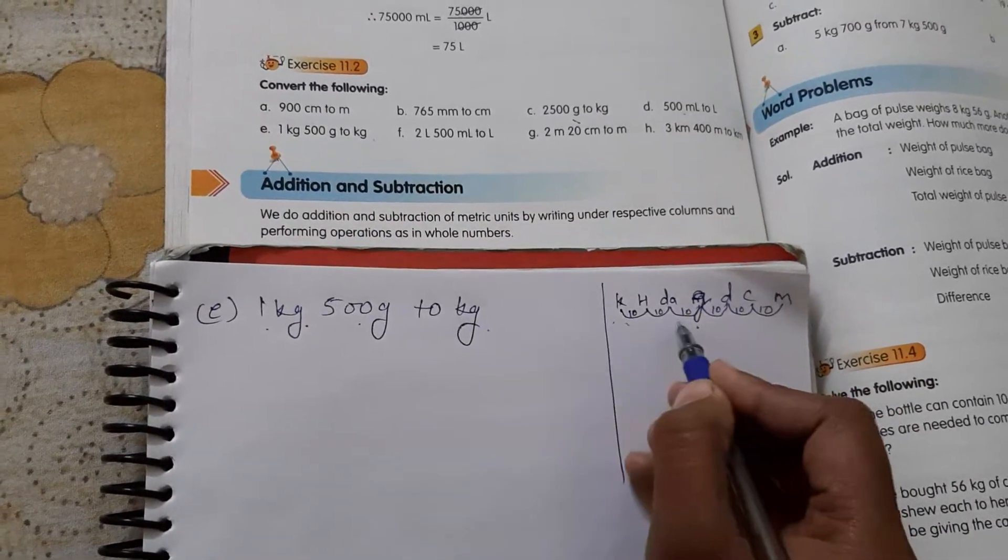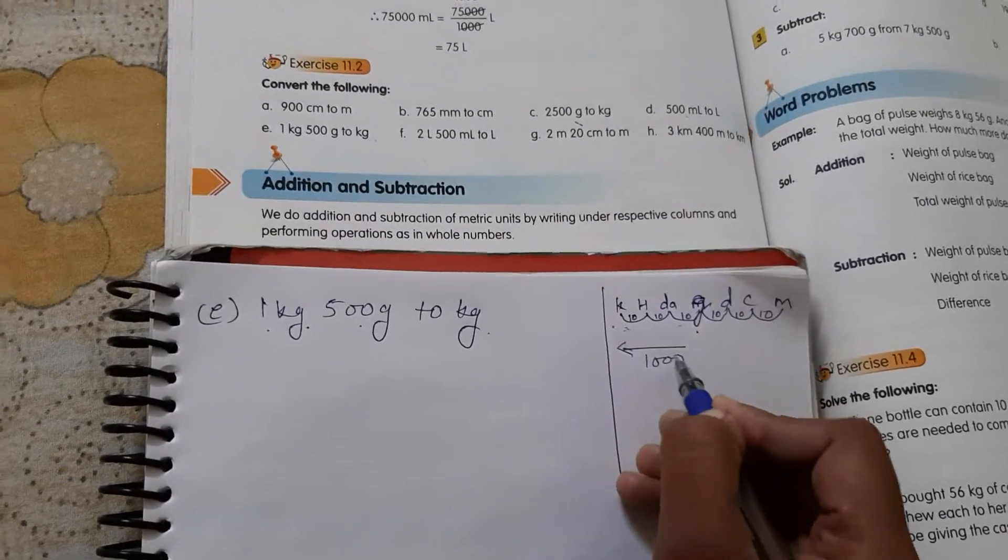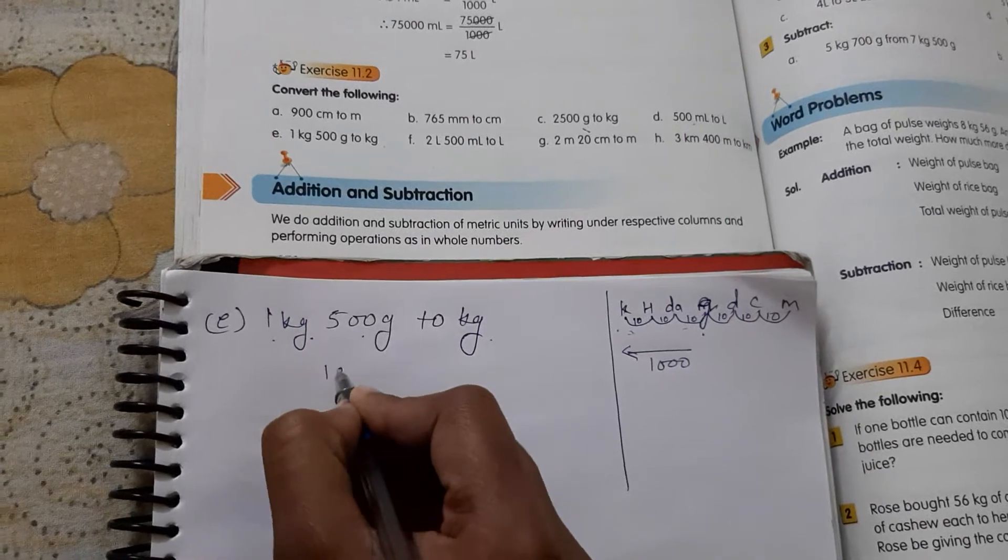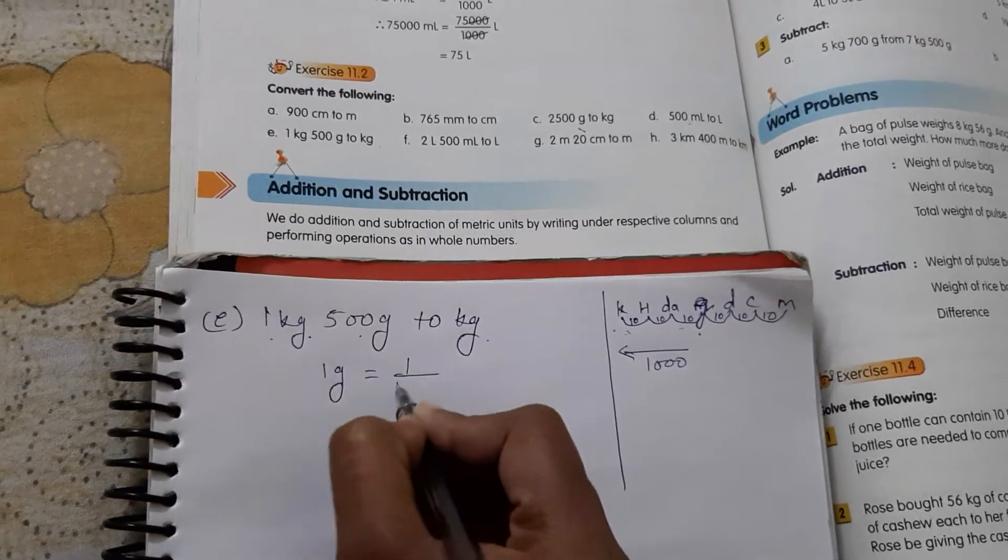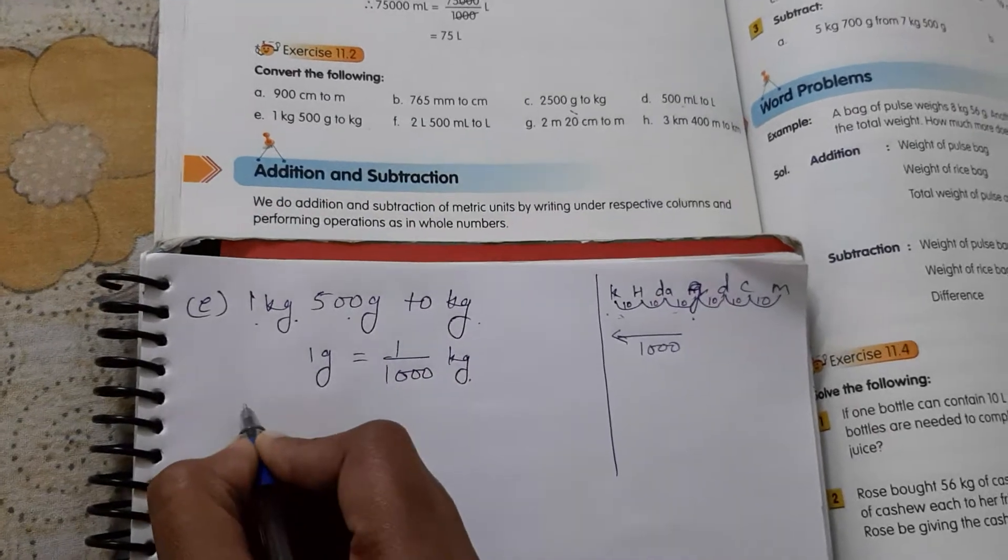And now, gram to kg we have to change. We have to go to this side, kg side. What do we have to apply? Divide. Of what? Thousand. So you know it very well: one gram equal to one upon thousand kg.